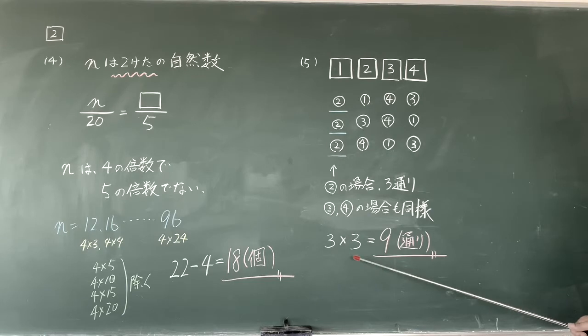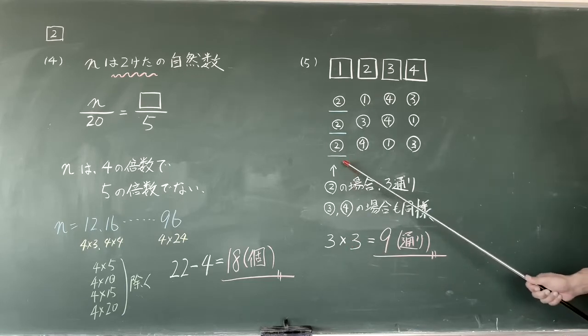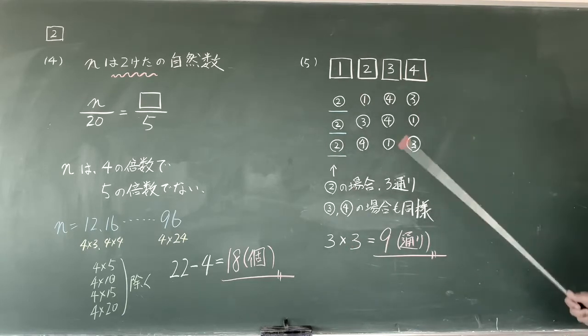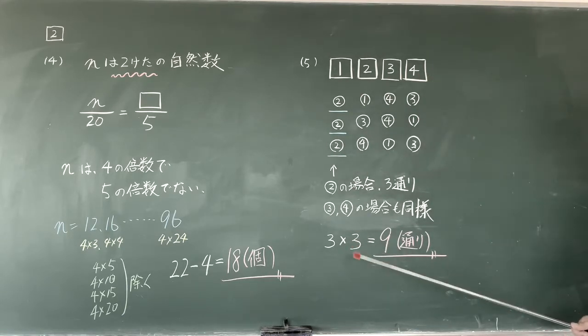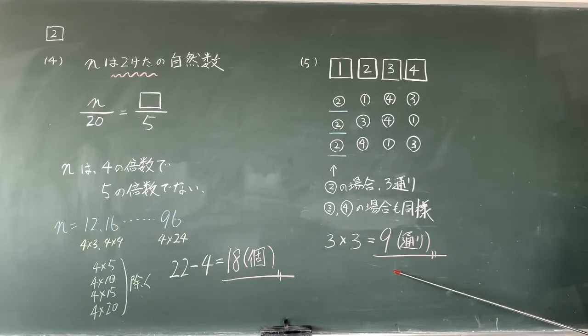5番です。箱と中身が違うということで、ここに2を入れた場合ということで書きました。そうすると3通りあります。2の場合3通り。同じく3の場合、4の場合も同様なので、3×3。不安な人は全部書いても良いですが、9通りです。